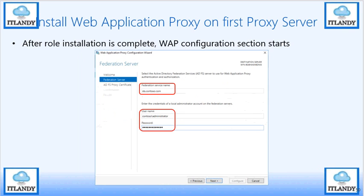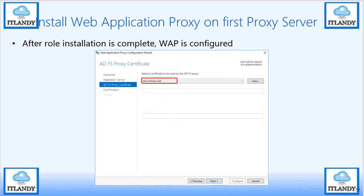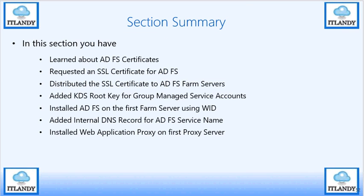After specifying the WAP option, you need to install the certificate mentioned earlier. Specify the backend federation server address, using the same admin account you used to install the server. This is needed to establish trust between the WAP and the ADFS farm. Select the certificate, validate, and you are done.